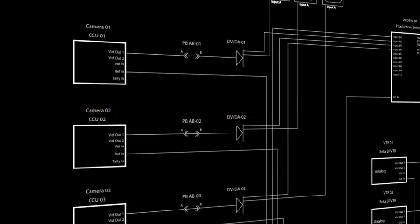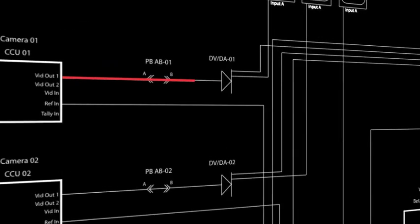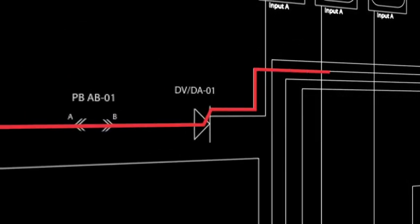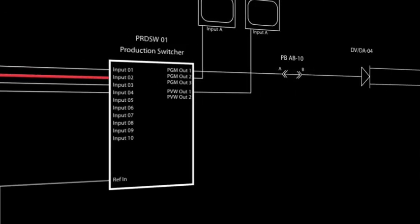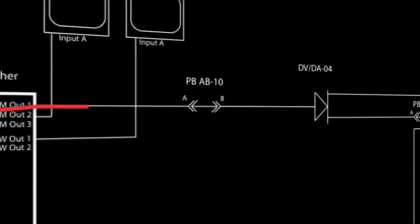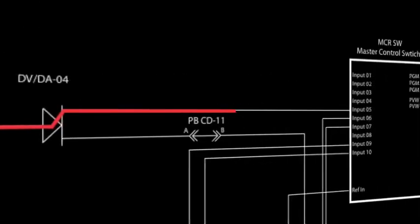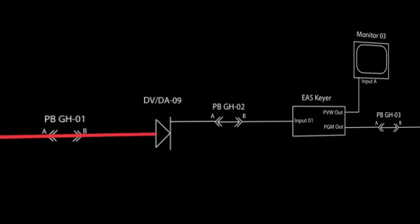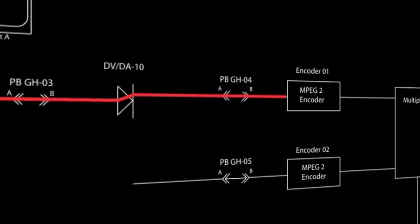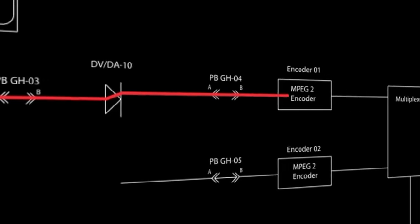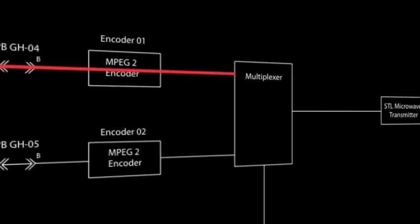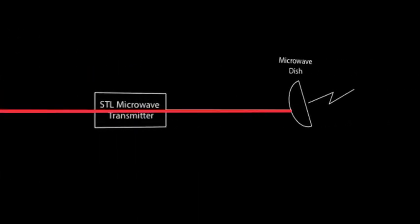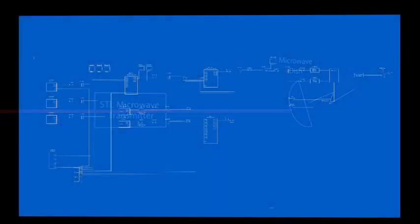Here is a quick review of what we've just gone over. The output of camera 1 passes through a patch bay and DA, and feeds the input of the production switcher. It then passes through the program out through a patch bay and DA, and goes into the master control switcher. Then through a patch and a DA, followed by another patch and into the EAS keyer. More patches and more DAs allow it to feed into the encoder, where it is then multiplexed and fed into the STL microwave transmitter for transmission to the transmitter site.